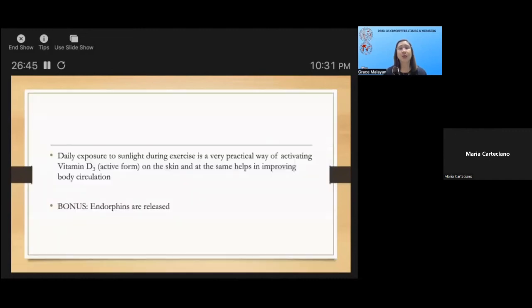Daily exposure to sunlight during exercise is a very practical way of activating vitamin D3 on the skin and at the same time helps in improving body circulation. It will help burn fats and even release endorphins or happy hormones. These hormones help relieve pain, reduce stress, and improve the sense of well-being. This should be a very good bonding for the family to exercise under the sun, maybe two to three times a week.